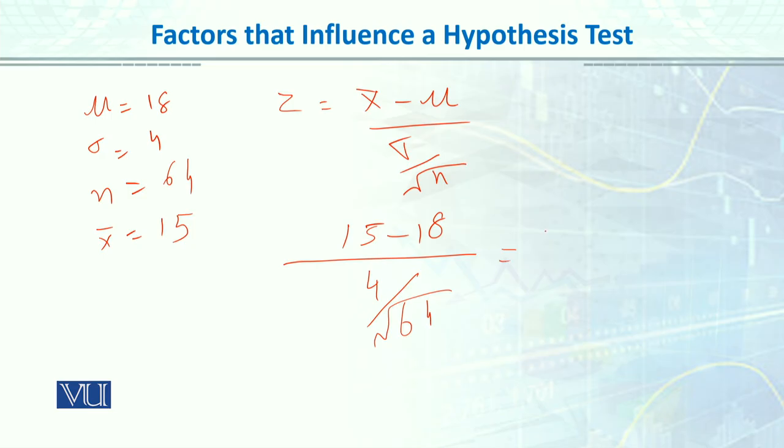15 minus 18, which is minus 3, divided by 0.5. Now, if you calculate this, then the answer will be: first, our z score was 3, now our z score will be 6. This is how our more significance achieved and our significance has increased.